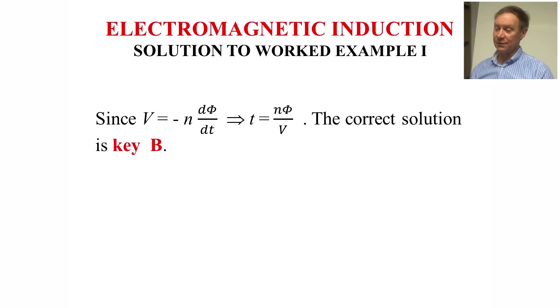The solution to worked example one: since V is minus N d psi by dt, that implies that T is N psi over V. So the correct solution is therefore key B.